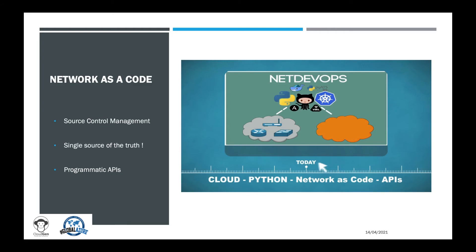I propose three principles for network as a code within the NetDevOps culture. Principle number one is source control management. If you are going to have a network-as-a-code strategy, we need to treat the network configuration as a code, and the code is stored in source control — which basically means that these repositories will include collaboration features such as issue logging, release tracking, and all the Git and Agile features. This means that successful NetDevOps teams can leverage code reviews, issue logs, and pull requests in the same way successful software development teams do.